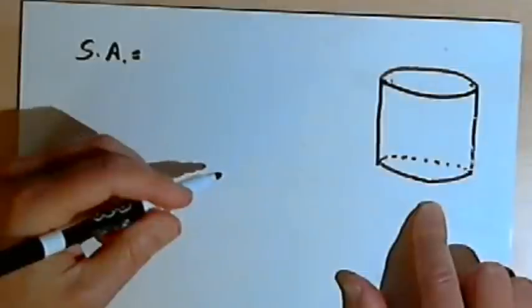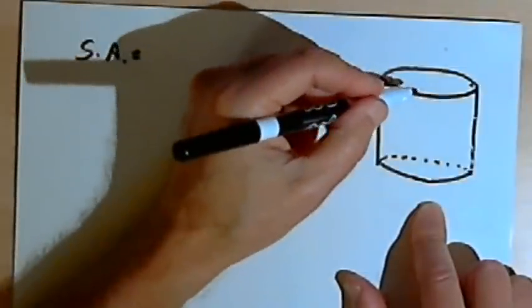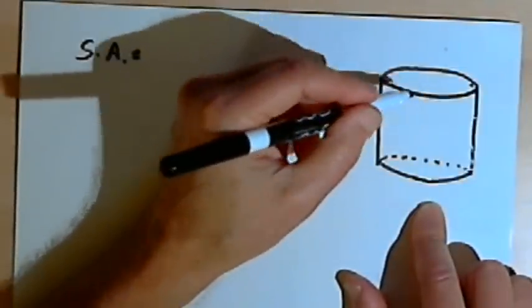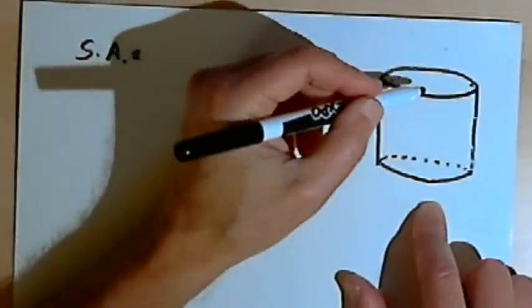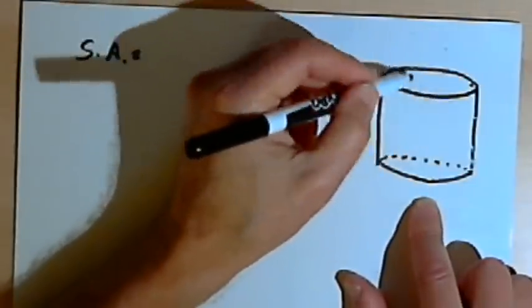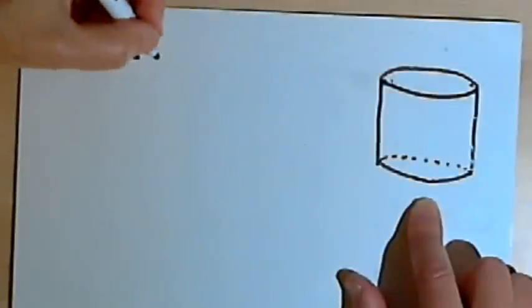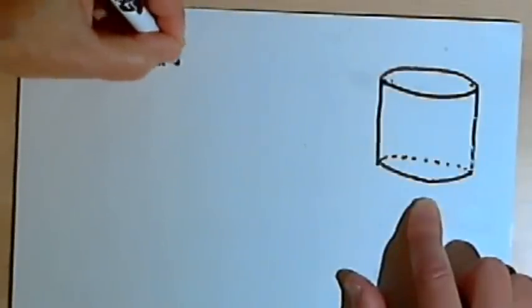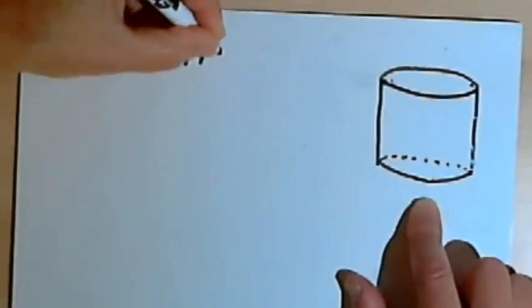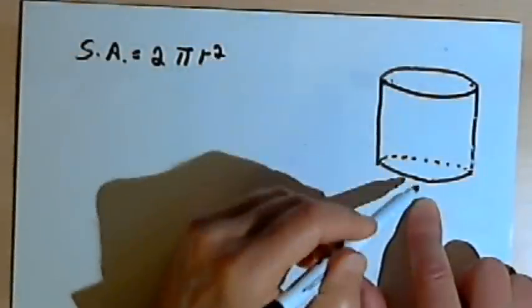So one of the bases would have the surface area of a circle. It would just be pi r squared. That's the formula for the area of a circle. And I've got two bases, so I would want two times pi r squared. That would give me both of the bases.